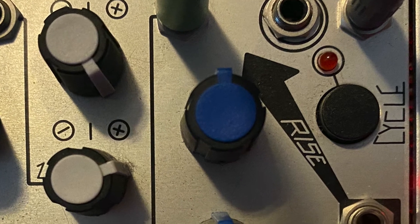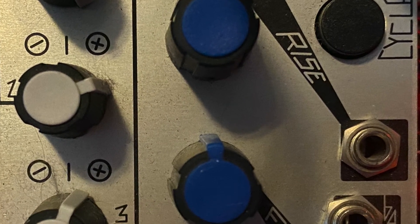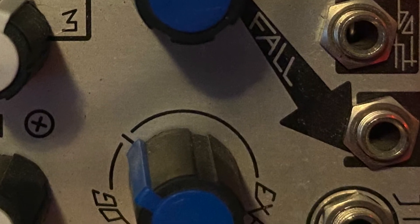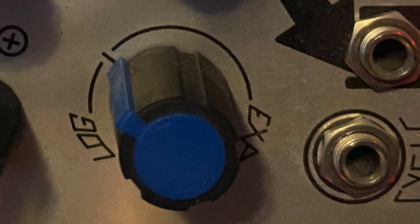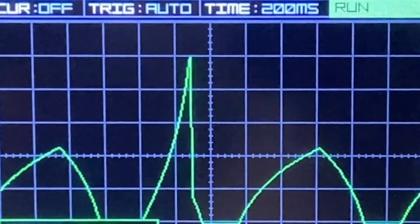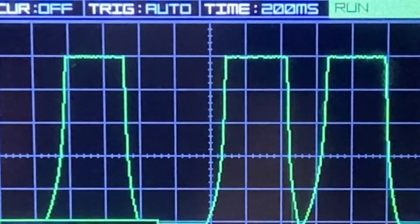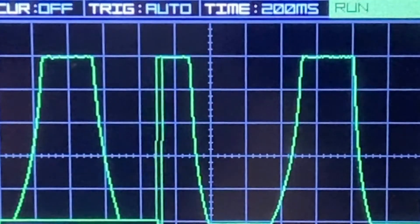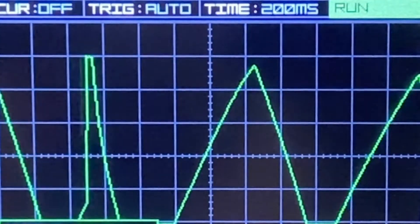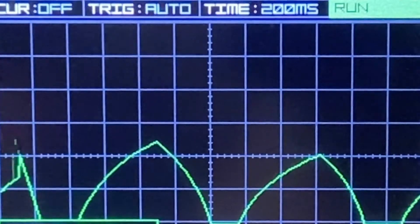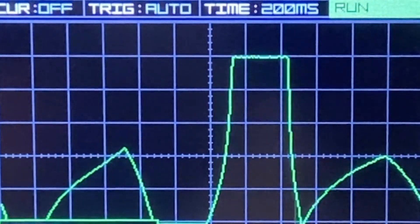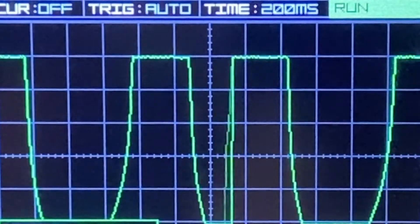However, this particular slew limiter on the Make Noise Maths module allows us to shape the attack and decay parts of the envelope to other curves besides linear. This is important because there are exponential functions at work with how we hear sound waves, and we would like to synthesize that with electronic instruments. Additionally, if we use logarithmic curves, we get slower results than with linear, and if we use exponential curves, we get faster results than with linear.